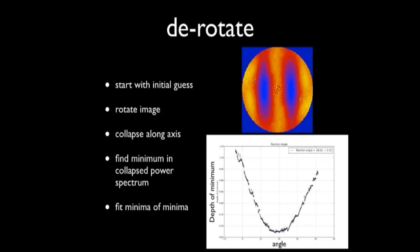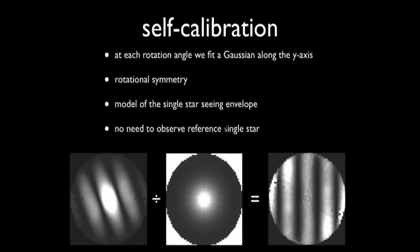So look, if I had collapsed along that axis, you wouldn't have any minimum at all. It would be essentially flat. If I collapse this way, then you have a nice oscillation pattern, so that minima gets deeper. So I fit the, I find the minima of the minima, and that gives me the position rotation angle.